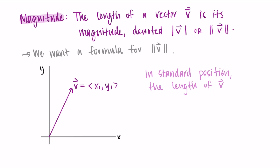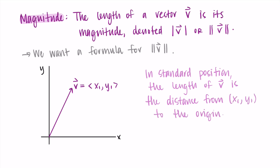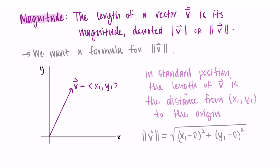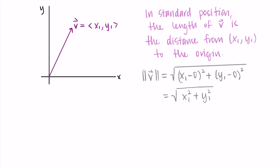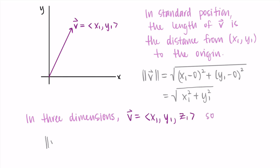In standard position, the magnitude of this vector is just the distance from the point (x₁, y₁) to the origin — the length from the endpoint to the beginning point. So the magnitude of v equals the square root of (x₁ − 0)² + (y₁ − 0)², which is our distance formula in two dimensions. This extends to three dimensions: if we have a three-dimensional vector v = ⟨x₁, y₁, z₁⟩, the magnitude is the square root of (x₁ − 0)² + (y₁ − 0)² + (z₁ − 0)².